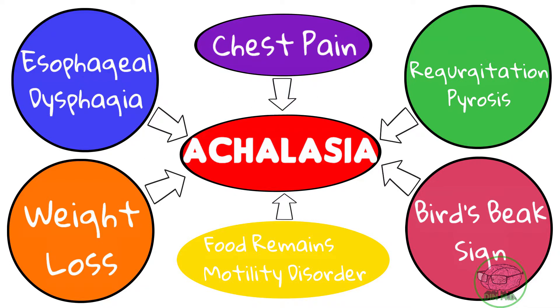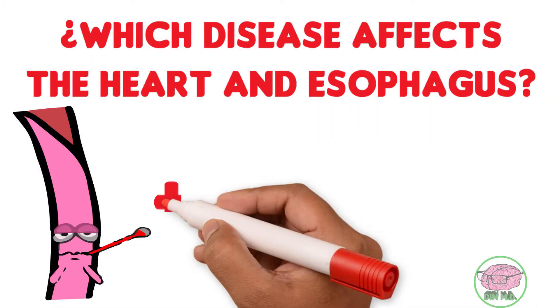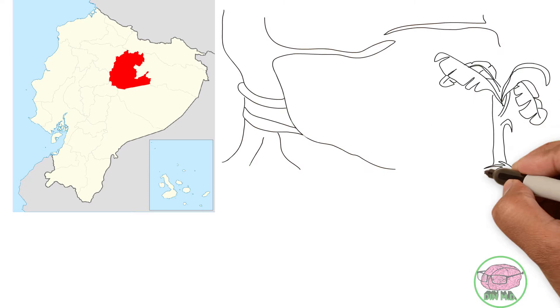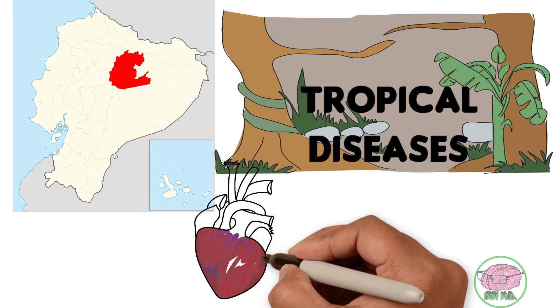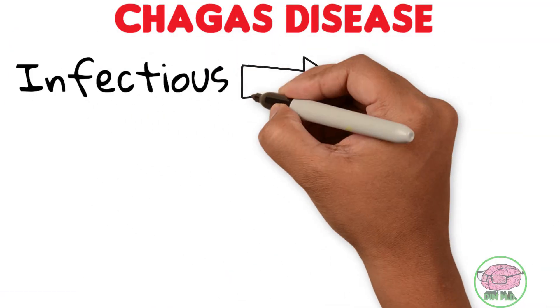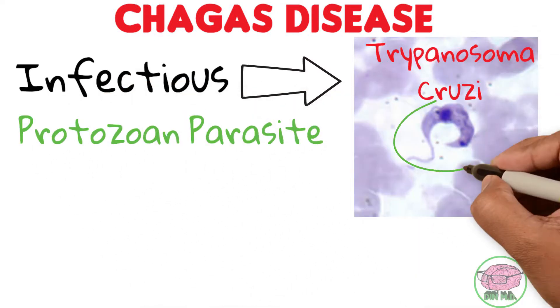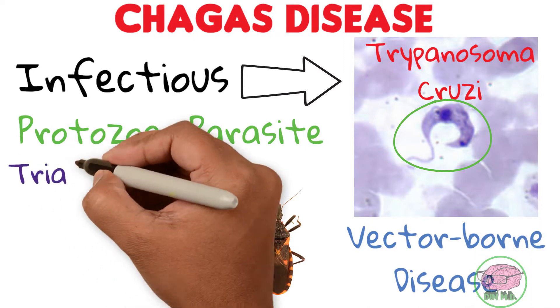This is when Juan's heart becomes important. The question we need to answer is: what condition can affect both the esophagus and the heart? An important hint in the clinical history is that Juan lived in Napo, part of the Ecuadorian jungle, which makes him susceptible to tropical diseases. An important tropical disease that affects both the heart and the gastrointestinal system is known as Chagas disease. This is a type of infectious disease due to a microorganism known as Trypanosoma cruzi, a parasitic protozoan. This parasite is transmitted via a vector — insects from the family known as the triatomines.